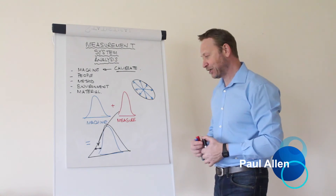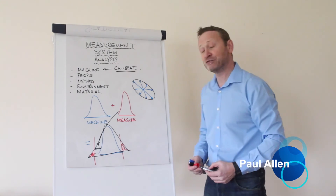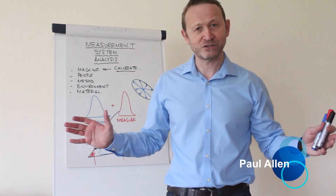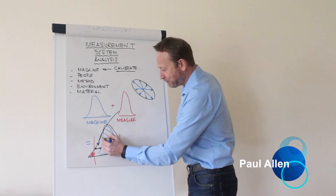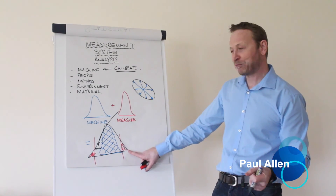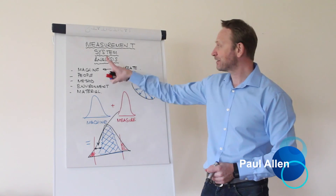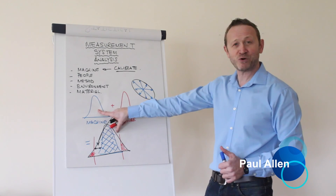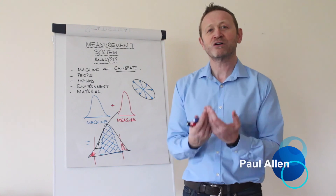Measurement error always makes your process look slightly worse, slightly more variable than it actually is. And if specifications come into contact with this distribution, it will also make you inflate your defect rate — either seeing defects that aren't really there, or making the defect rate look bigger. If you're trying to get rid of the defect rate, getting rid of measurement error is part of the solution, because if you could just measure that blue distribution, you actually have a very low defect rate. The problem isn't the machine — it's the measurement process. You have to fix this before you go and look at that. MSA will tell you if you have this problem; otherwise you'll work on the wrong thing and wonder why you're not making any headway. MSA is going to tell you how wrong your measurement systems are.